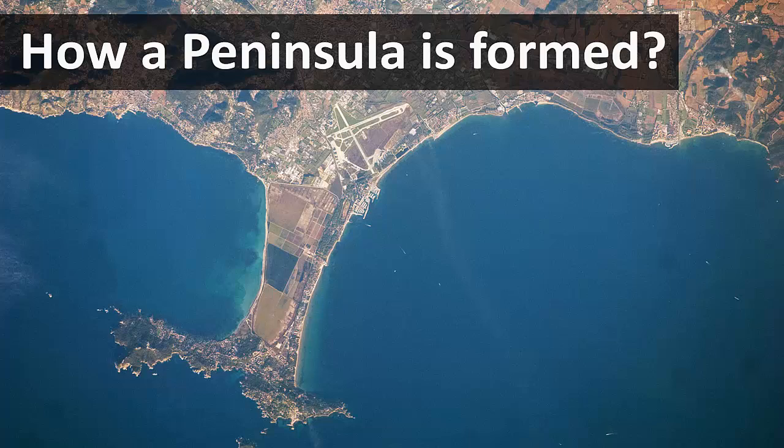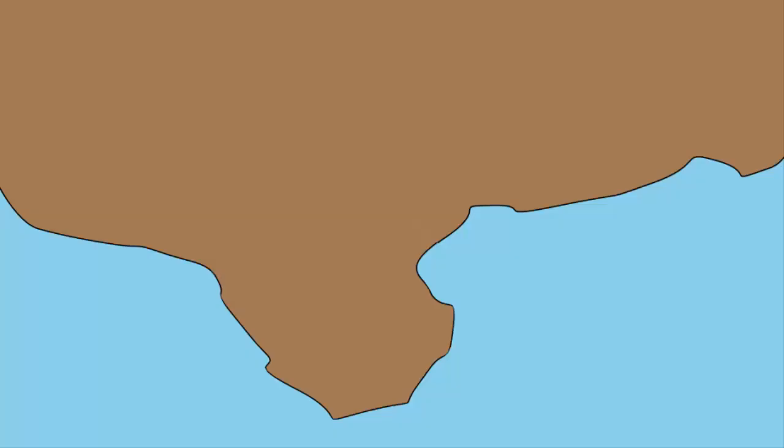In this video, we will learn how a peninsula is formed. First, let's define what a peninsula is. It is a piece of land which is surrounded by water on three sides, and the fourth side has to be connected to the mainland.